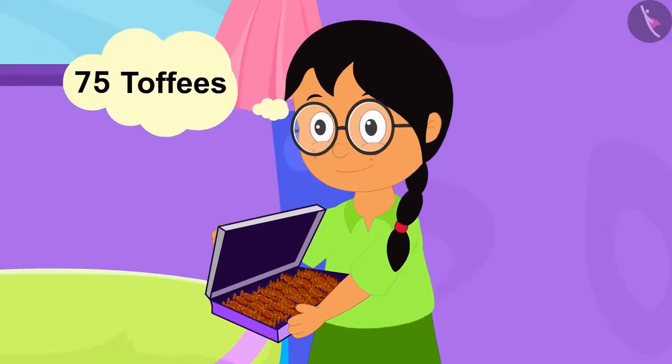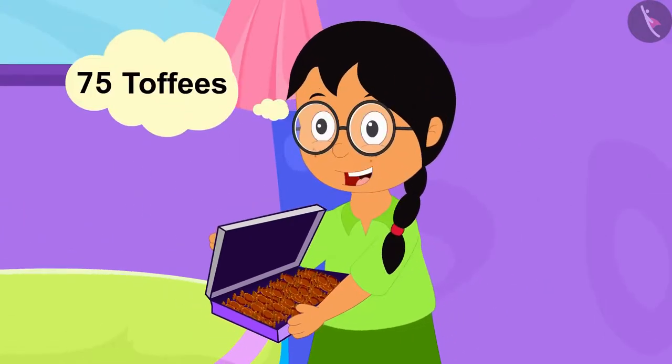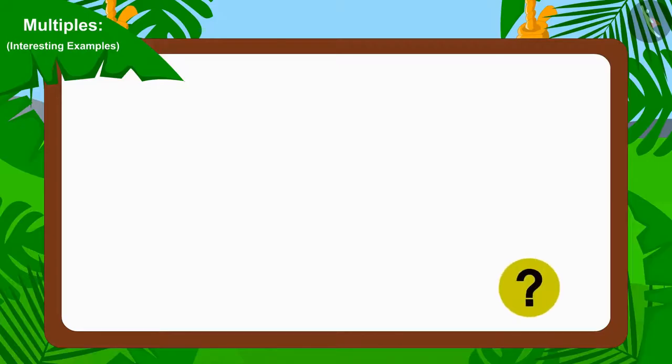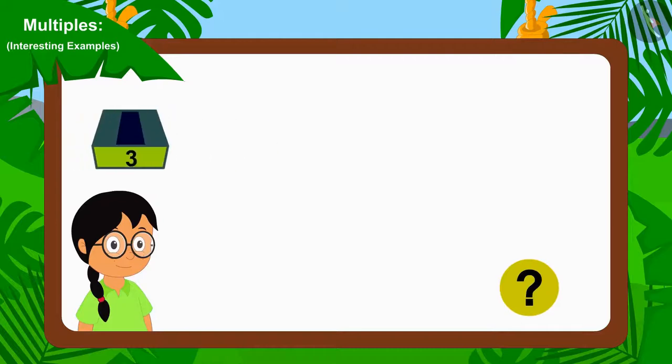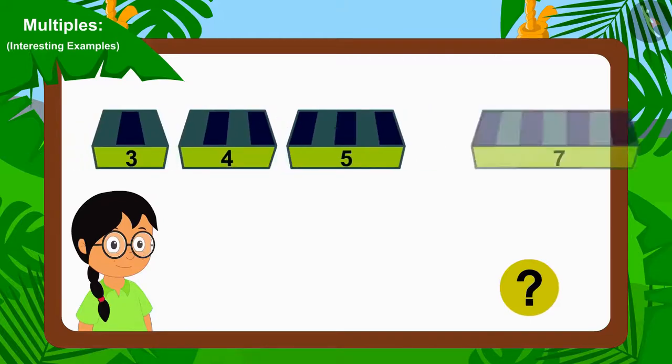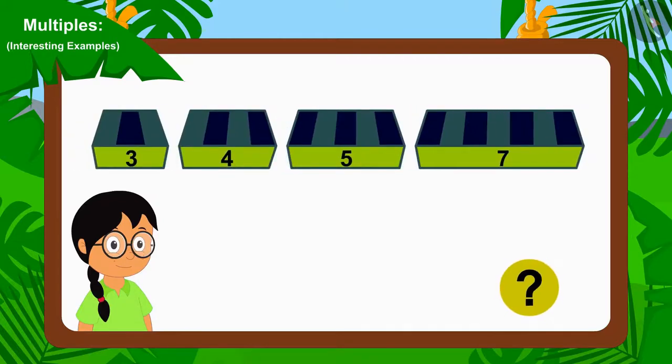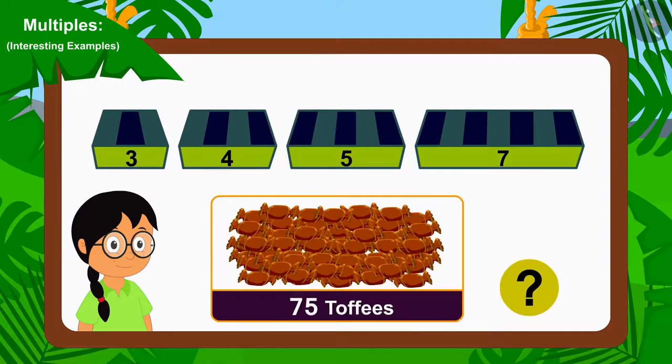She found 75 toffees in this packet. Now, can you tell which of the groups of 3, 4, 5 or 7 can Meenu use to distribute these 75 chocolate toffees equally? If you want, you can stop the video and find the answer.